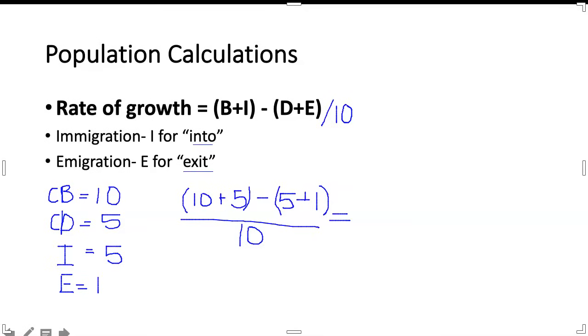So we've got to use the divide by 10 to be able to use the crude birth rate and death rate. So we have 10 plus 5 is going to give us 15. We're going to subtract 6, all over 10, which is going to give us 9 over 10. And remember, you're able to use your calculator in class. So don't forget to bring it on Tuesday. So 9 over 10 is going to give us 0.9% growth rate.